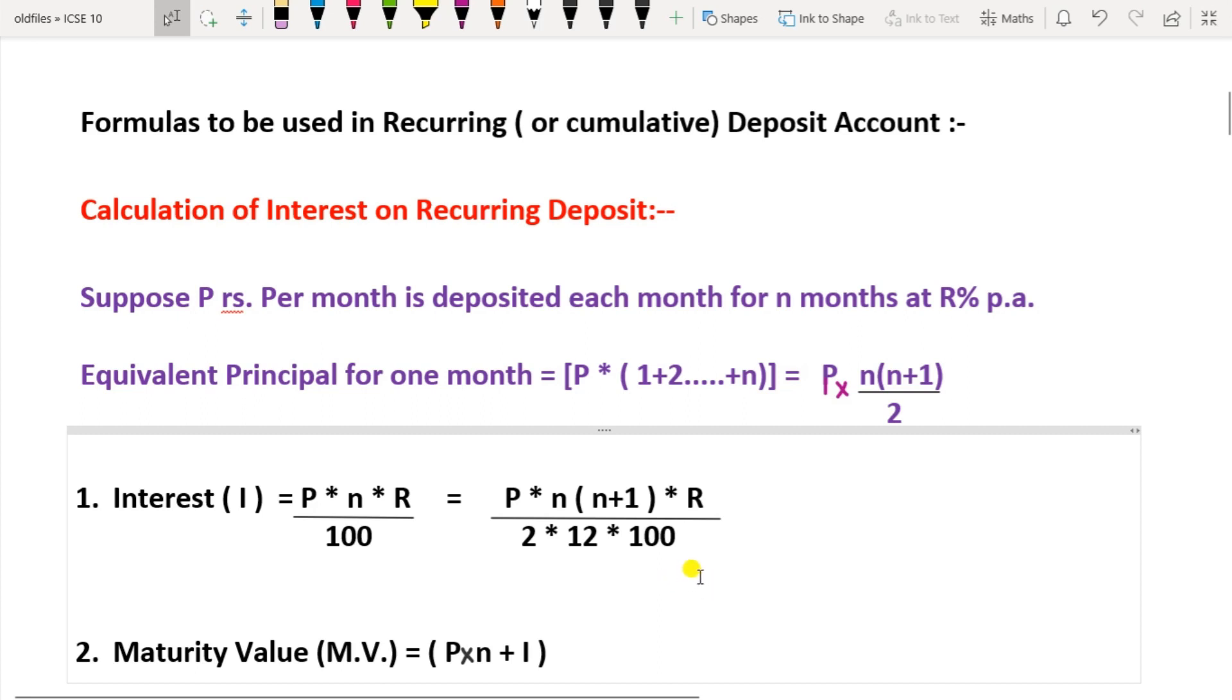This interest is calculated with a formula. Suppose P rupees per month is deposited each month by an investor for n months at r% per annum. So, principal for one month will be P multiplied by the number of months. This is in series, these are natural numbers in series, so we can write it as n(n+1)/2. The interest is calculated as simple interest. We know the formula for simple interest as I = PnR/100. Now, in place of n, we have to substitute this value n(n+1)/2, and since it is in months, it should be divided by 12.